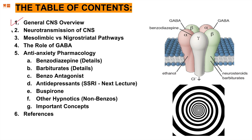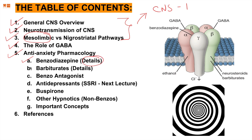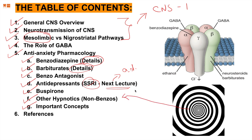The table of contents begins with a general CNS overview — neurotransmission, mesolimbic versus nigrostriatal pathways, and the role of GABA. This portion also exists in CNS lecture one in more detail. Today we'll focus more on the mesolimbic aspect, then move into anti-anxiety pharmacology with benzodiazepines and barbiturates in detail, benzo antagonists, and antidepressants such as SSRIs, buspirone, other non-benzo hypnotics, and important concepts.